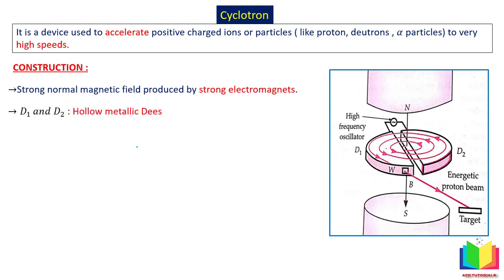Next, we have two D's — D1 and D2 — which are D-shaped metallic hollow structures. You can imagine it like a round-shaped tiffin box that is hollow inside, cut at the center to get two D-shaped objects. These are hollow and metallic. As we know, inside a hollow conductor the electric field is zero — similarly, inside these D's the electric field will be equal to zero.